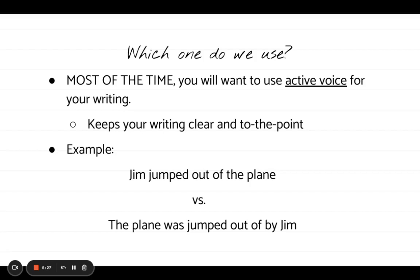Let's look at two sentences: 'Jim jumped out of the plane' versus 'The plane was jumped out of by Jim.' In the first sentence, Jim is the subject — he is the one actively jumping out of the plane, probably skydiving. In the second sentence, if we cross out 'by Jim,' we're left with 'the plane was jumped out of.' We don't know who is doing the jumping — it's just a weird sentence that leaves a lot of questions and doesn't tell us who or what is doing the action.